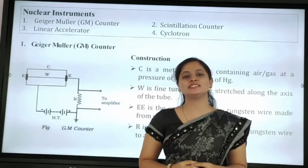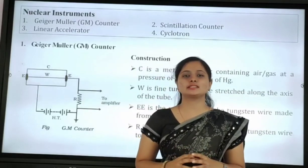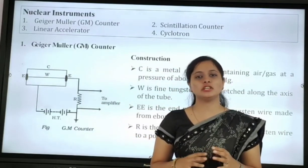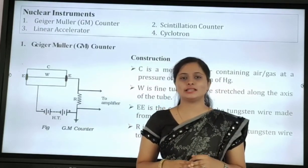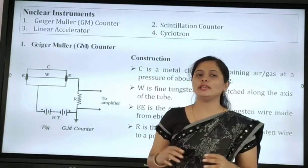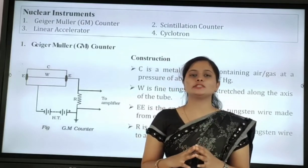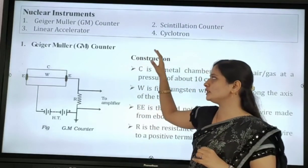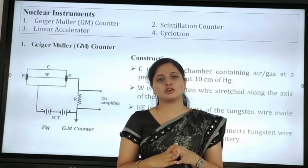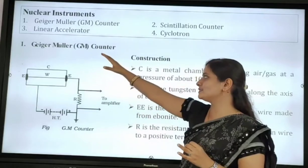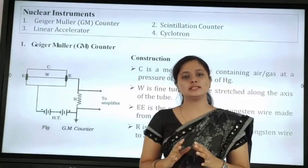Hello dear students, welcome back to the CLE Degree College physics classes. In the last video we already discussed nuclear fission on the basis of the liquid drop model, as well as the shell model, their assumptions, and the magic numbers. In today's class we will study nuclear instruments: the Geiger-Muller counter (GM counter), the scintillation counter, the linear accelerator, and the cyclotron.